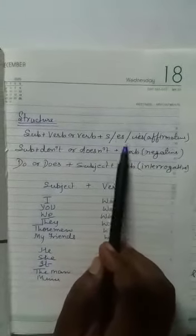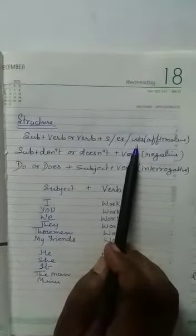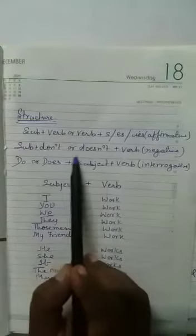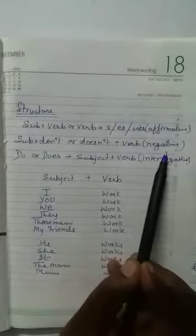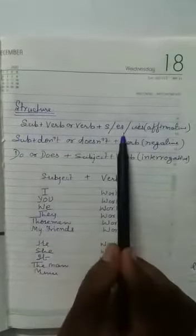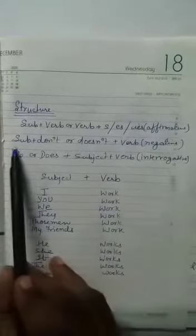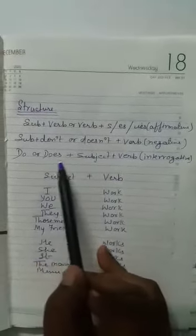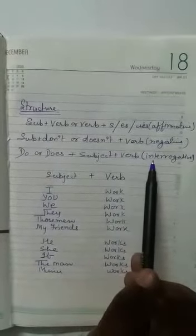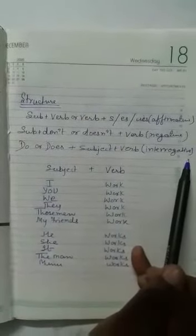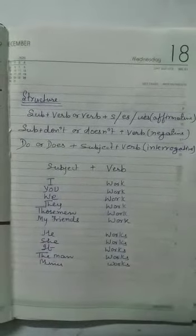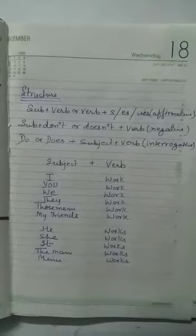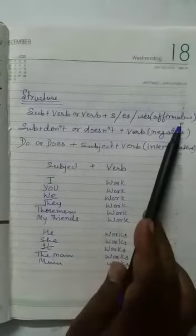The structure to make simple present tense is subject plus verb, or verb plus s or es. Subject plus don't or doesn't plus verb for a negative sentence — that is affirmative and negative. And when we make the sentence with do or does plus subject plus verb, that is the interrogative sentence. First, we will talk about affirmative sentences.